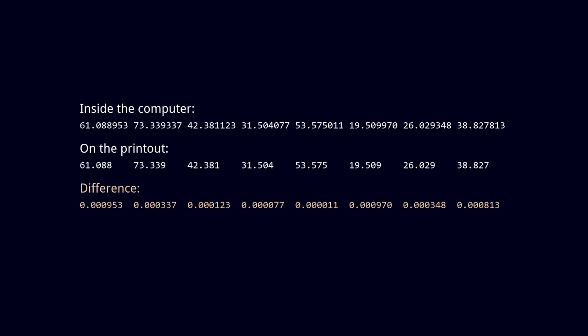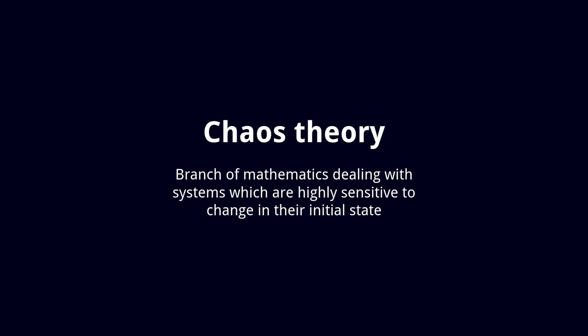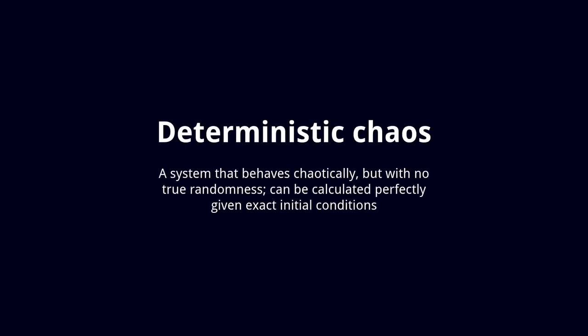This tiny difference of only 0.0001 resulted in a completely different output. Lorenz later named this phenomenon chaos theory, when a small change in initial input can result in a massive change later. Because the exact same input always produced the same result, this is known as deterministic chaos.